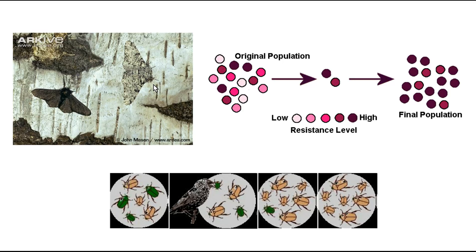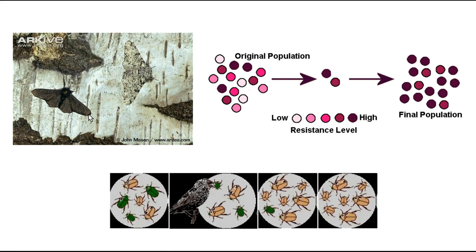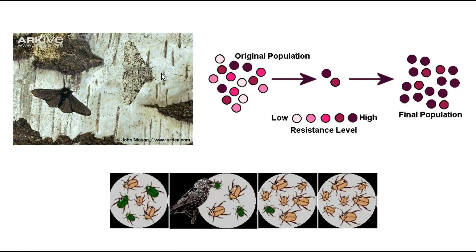Here are a couple more examples, one being the peppered moth. The peppered moth used to be a light colour, well suited to the environment at the time — it blended in with the trees so it wasn't being eaten by birds. Every now and then a dark moth would appear, and that variation wasn't favourable so those moths were eaten more. However, with the industrial revolution the trees turned darker, and now the lighter moths were dying off while the darker moths survived, passed on their dark colour gene, and ended up making up about 98% of the population compared to only about 2% light moths.